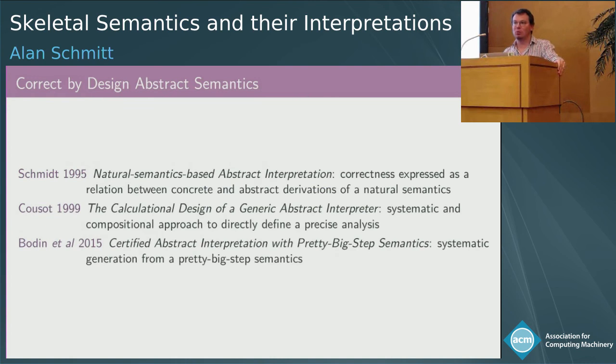There is a lot of work related to this. I just focused on the part, the correct by design abstract semantics. Our approach goes back all the way to what Dave Schmidt did in 1995, where he would prove that concrete and abstract semantics were correct by relating natural semantics derivations. Then a bit later, Patrick Cousot defined a systematic and compositional way of directly defining a precise analysis. The main difference of what we're doing is we're not talking about analysis, we're talking about the semantics. More recently, we worked on a similar approach where we were defining semantics in a pretty big step way and showed that we could derive systematically correct by construction abstract semantics.